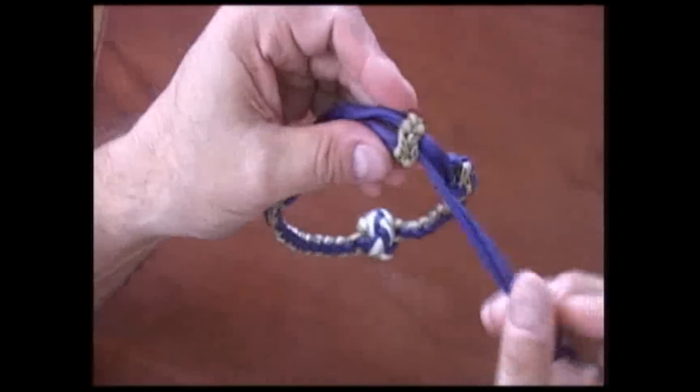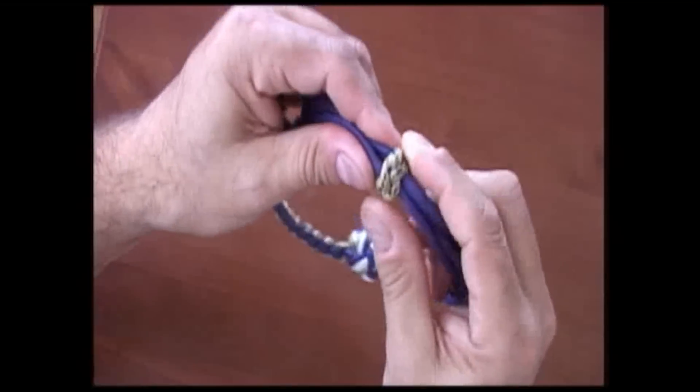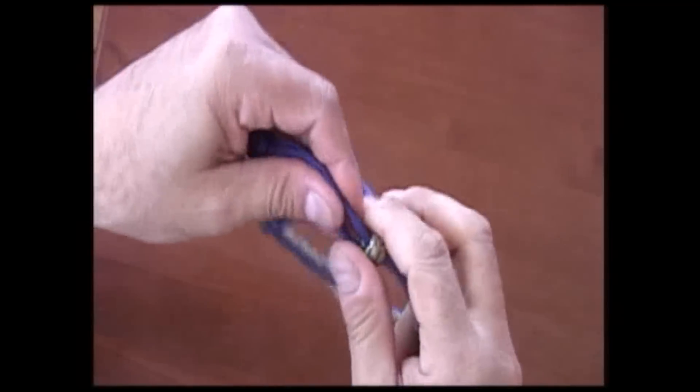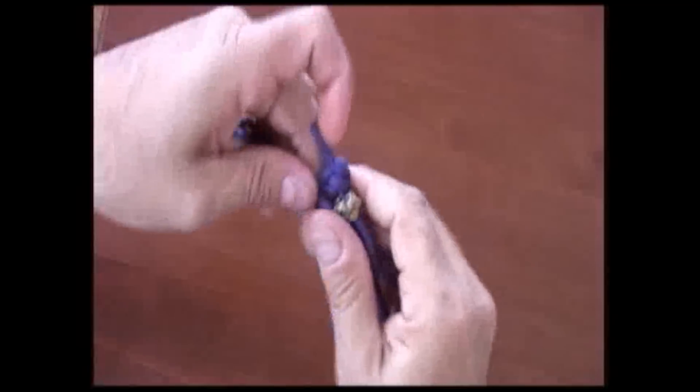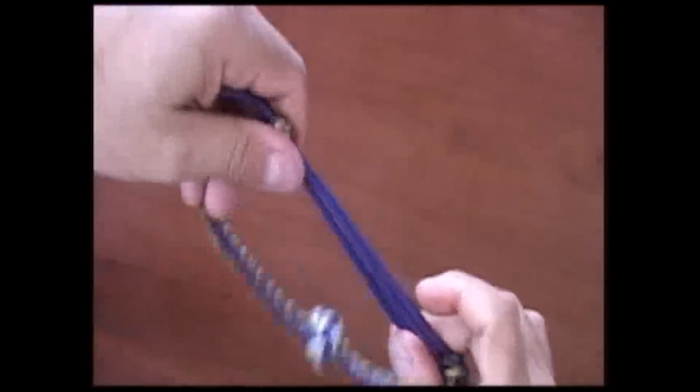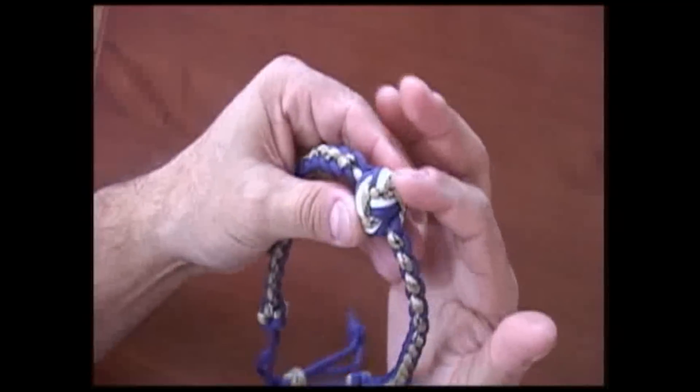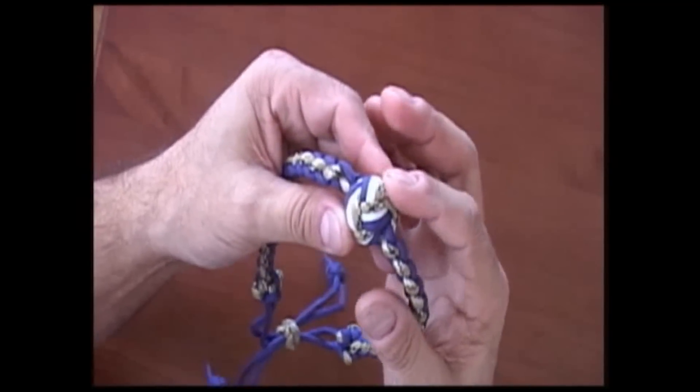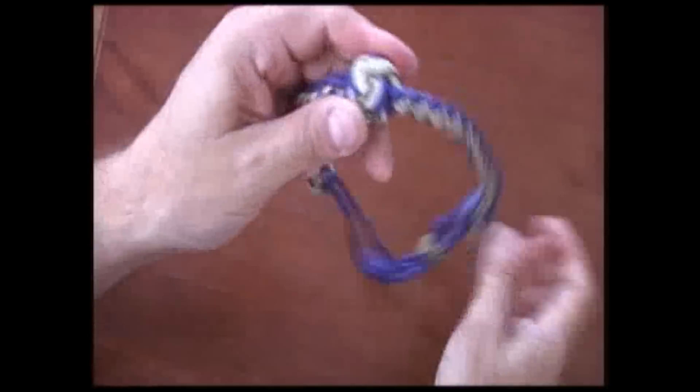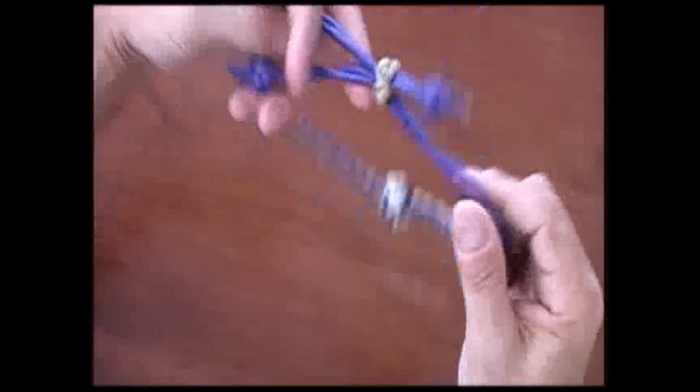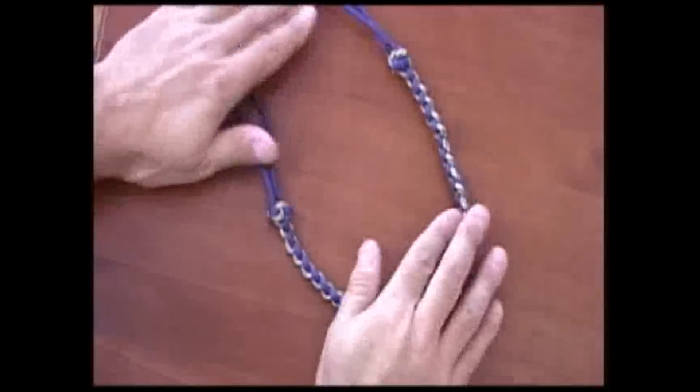Then we ran both of those through another lanyard knot in the middle and this is our adjuster, so we can adjust this however we need for whatever size that we want. You can adjust it up tight to where it rides close to your Adam's apple or right there on your breastbone, or you can loosen this up and have that ride down a little bit lower. So it's very flexible on what the user wants to do and it fits most people. That's what we've got here.